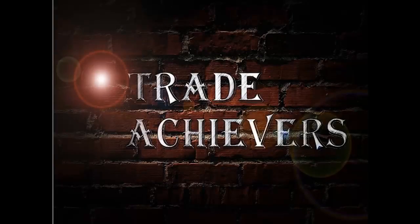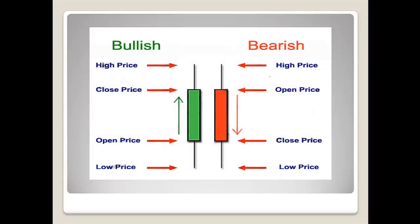Now let me show you how a candlestick actually looks. We have two types of candles — the green one is the bullish candle and the red one is called the bearish candle. A green candle represents that buyers were dominating the market at that particular time frame. For instance, if you are trading on a one-hour chart, the market opened at a certain price.